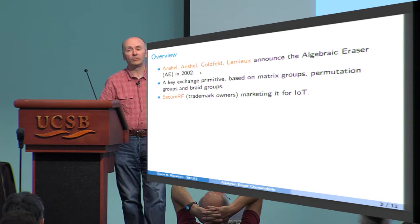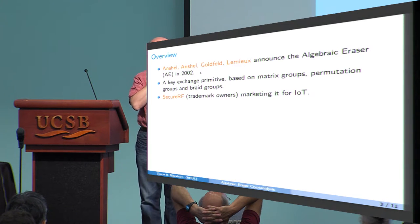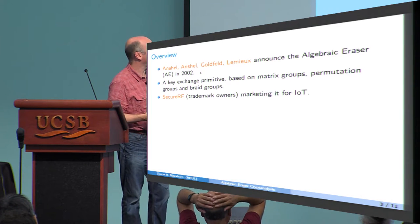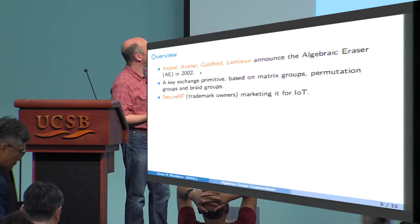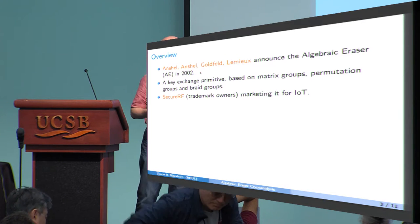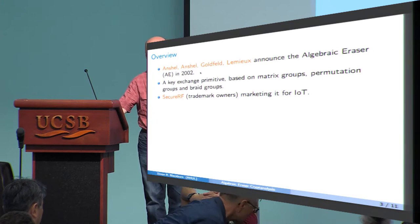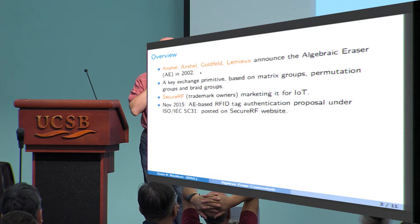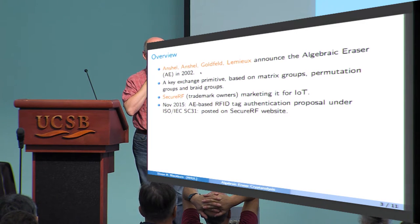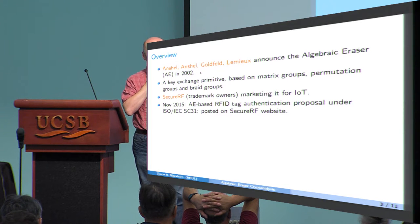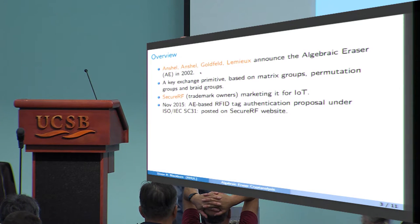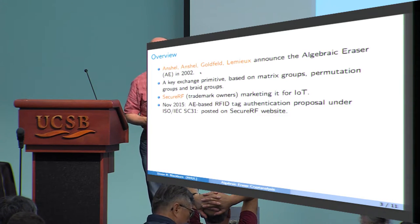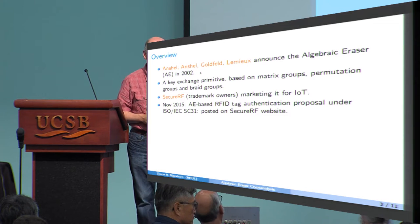And one of the reasons that I first became interested in this area is because SecureRF, a US company, they're the owners of the algebraic eraser, and they're actually out there marketing it for Internet of Things applications. So in particular in 2015, they have proposed to an ISO standards body an algebraic eraser-based RFID tag authentication protocol. If you've actually gone to this SecureRF website, in fact they've replaced that by a different protocol, due to attacks on this protocol.